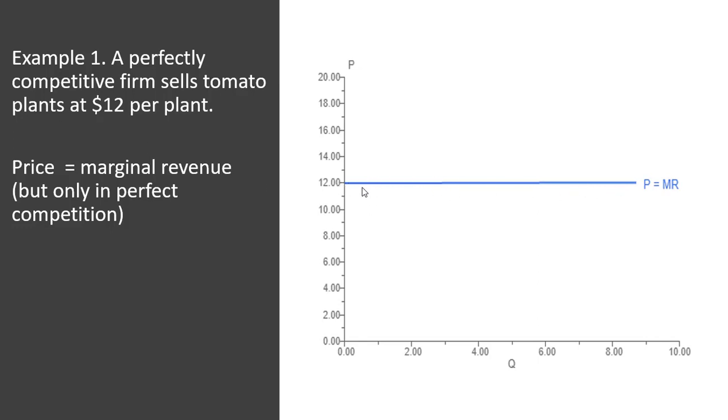This marginal revenue curve will just be a horizontal line at the price that the firm sells its product for. So horizontal at $12, or perfectly elastic at $12.